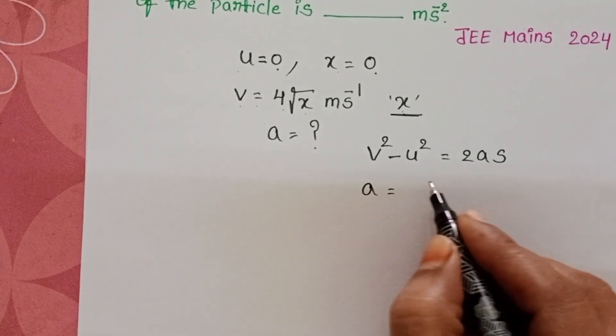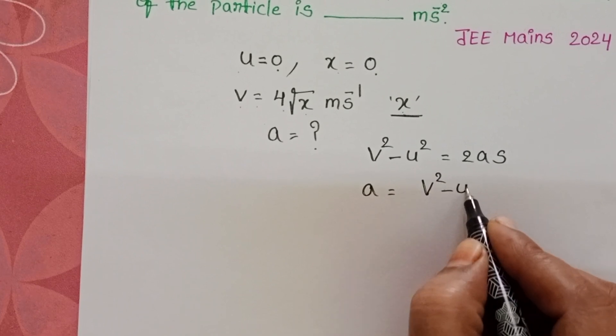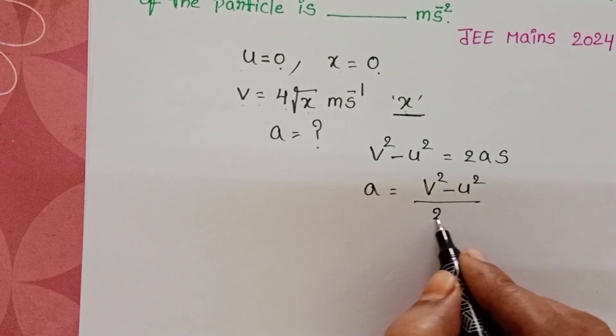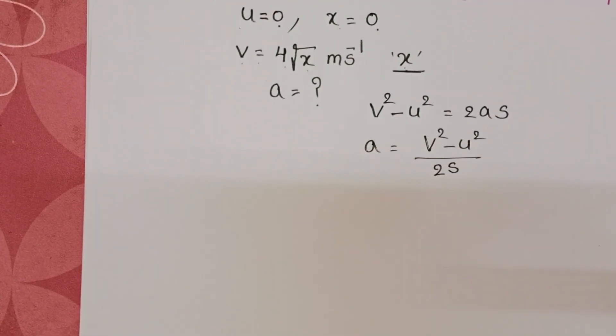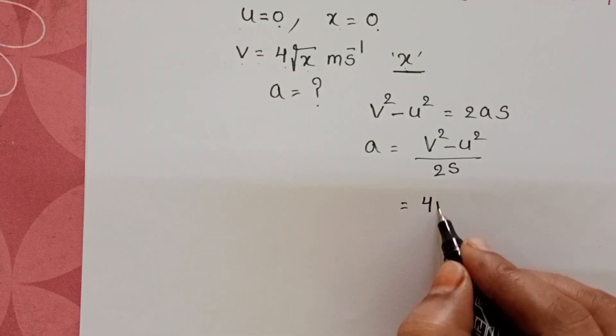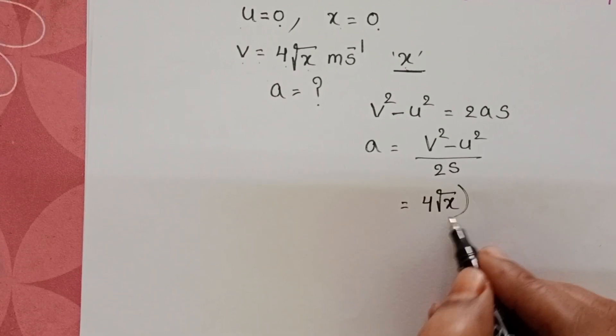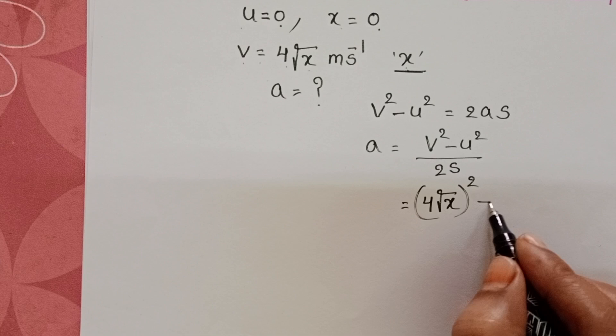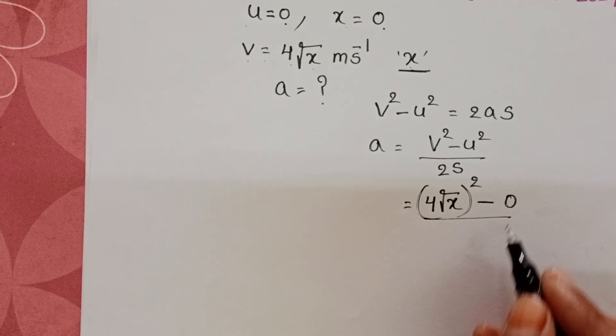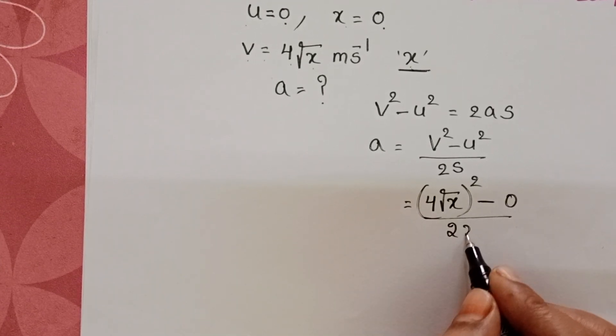Acceleration equals v square minus u square by 2s. Final velocity 4 into square root of x whole square. And initial velocity is 0. Distance is x.